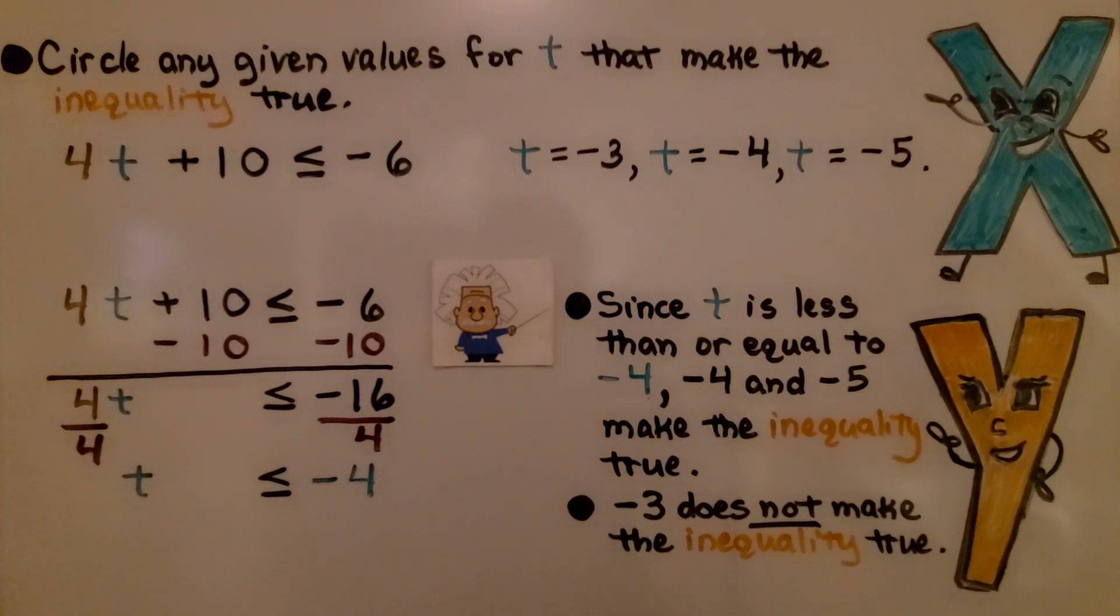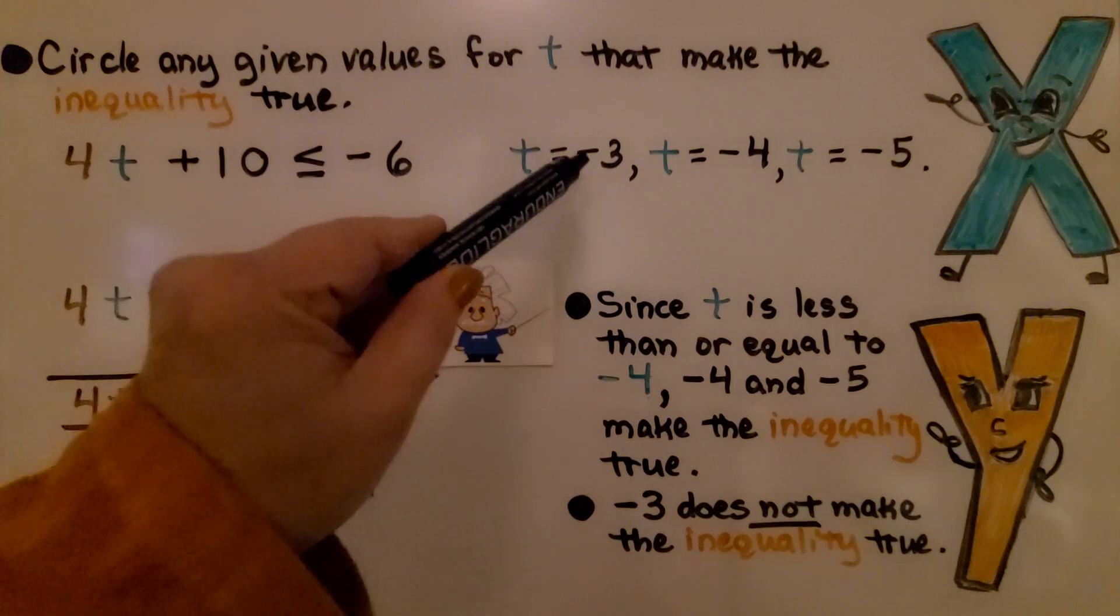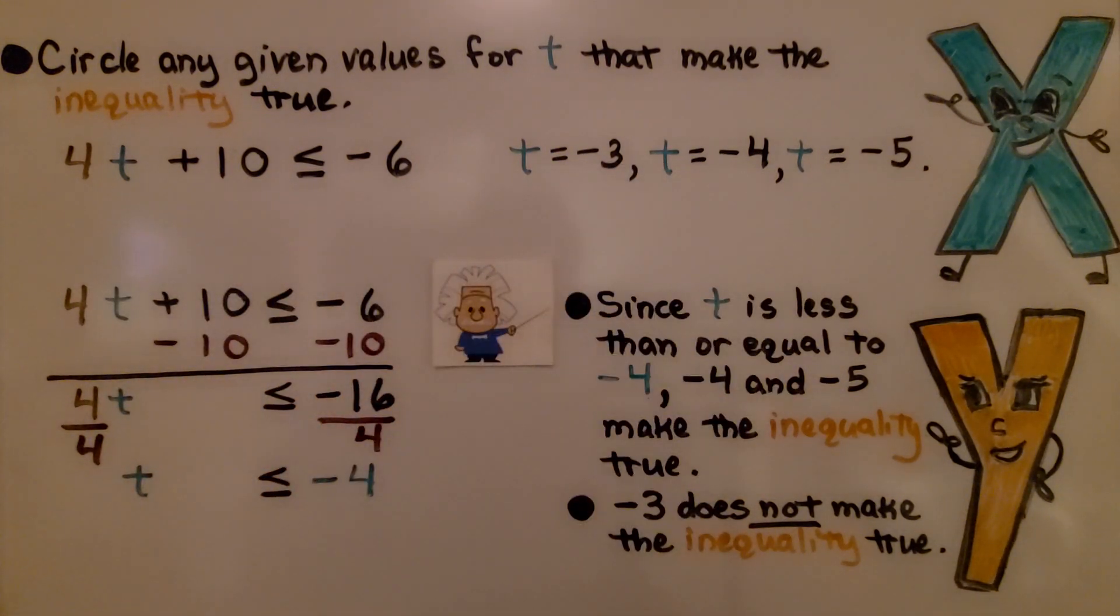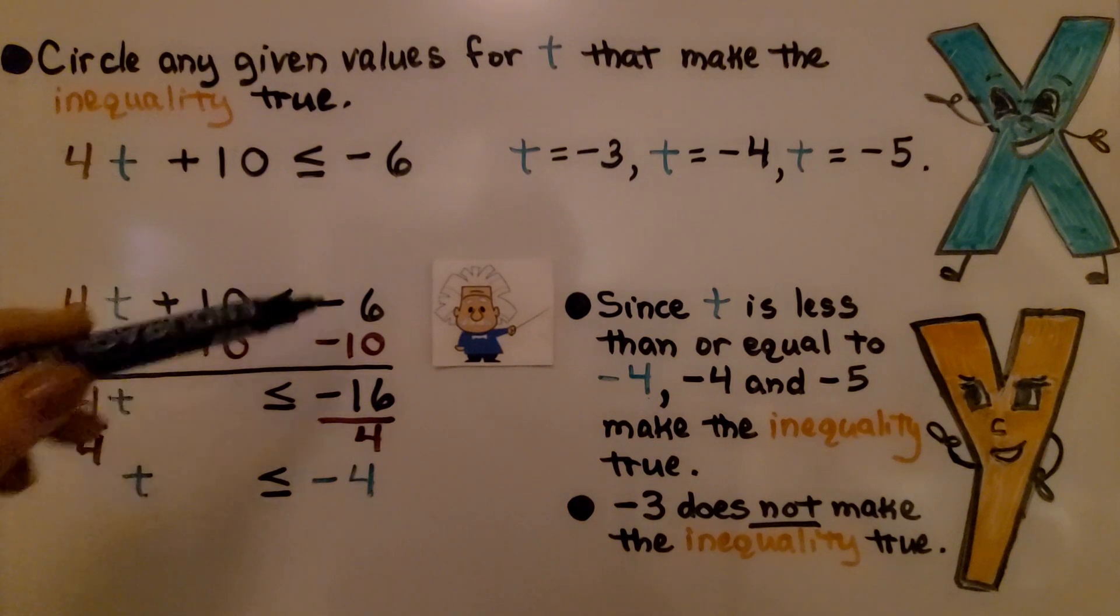Here it's telling us to circle any given values for t that make the inequality true. Is t equal to negative 3? Is it equal to negative 4? Is it equal to negative 5?